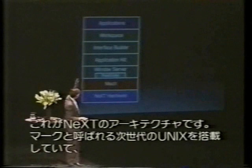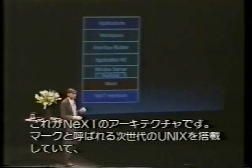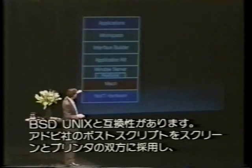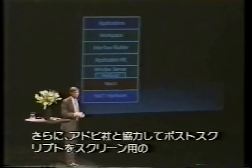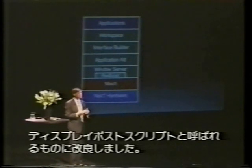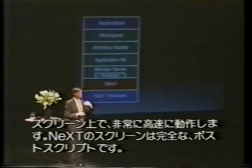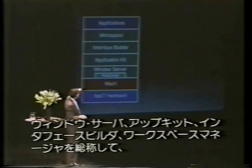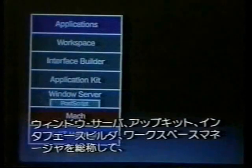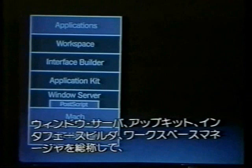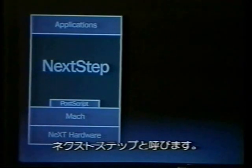This is what our software architecture looks like. We use a version of Unix called Mach, which is 100% compatible with BSD Unix. We use PostScript from Adobe — this is PostScript on the screen as well as the printer. We worked with Adobe to define what's called Display PostScript, which works very fast on the screen, as you'll see. Everything on our screen is in full PostScript. And then we have these four layers: the Windows Server, the App Kit, Interface Builder, and the Workspace Manager. Together, we call these four layers NeXTSTEP. So when you hear that term, that's what it means.